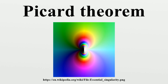Generalization and current research: Great Picard's theorem is true in a slightly more general form that also applies to meromorphic functions. Great Picard's theorem: If M is a Riemann surface, w a point on M, P1 equals C union infinity denotes the Riemann sphere, and f: M \ {w} → P1 is a holomorphic function with essential singularity at w, then on any open subset of M containing w, the function f attains all but at most two points of P1 infinitely often. Example: the meromorphic function f equals e^(1/z) has an essential singularity at z equals 0 and attains the value infinity infinitely often in any neighborhood of 0; however, it does not attain the values 0 or 1.